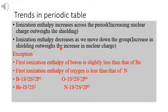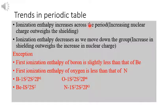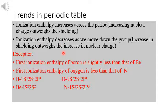How does ionization enthalpy change in a period and in a group? As we move from left to right across a period — from metals to non-metals — ionization enthalpy increases. This is because atomic size decreases, the nuclear charge outweighs the shielding, and therefore more energy is required to remove an electron. As we move down a group, ionization enthalpy decreases.